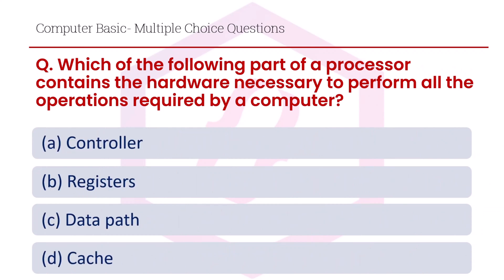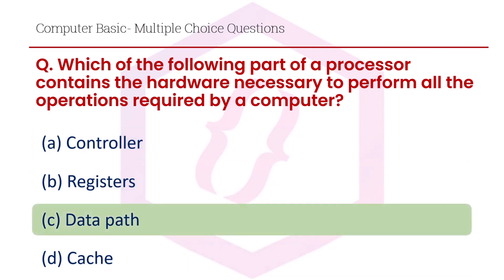Which of the following part of a processor contains the hardware necessary to perform all the operations required by a computer? Option A controller, option B registers, option C data path, option D cache. The right answer is option C, data path.